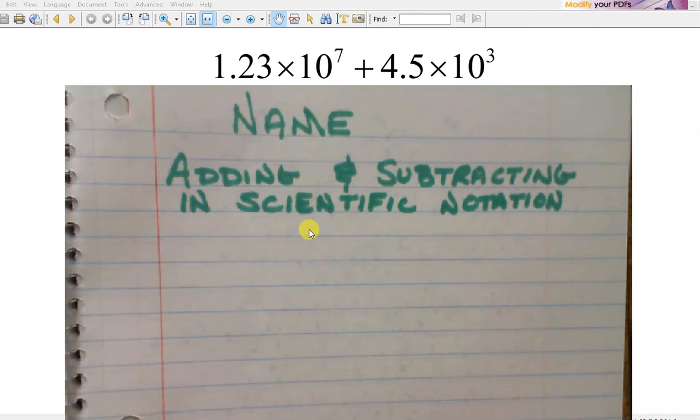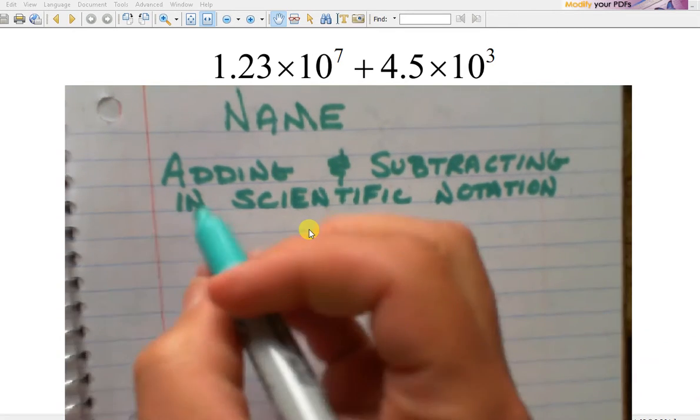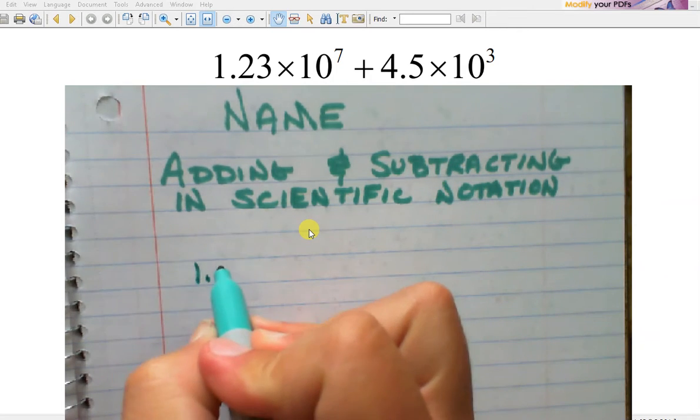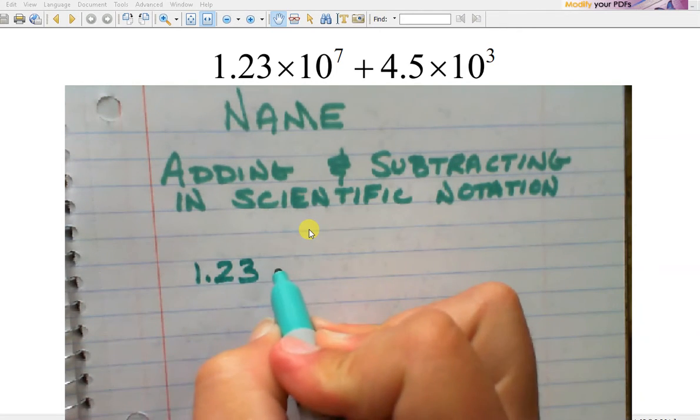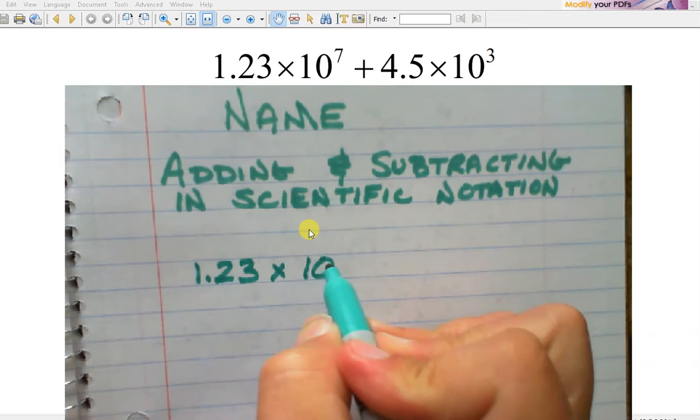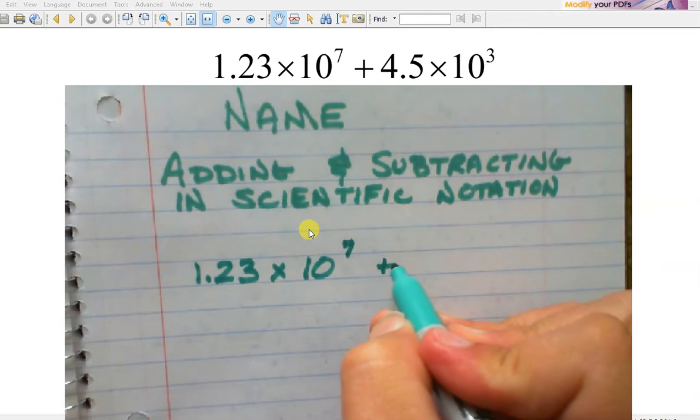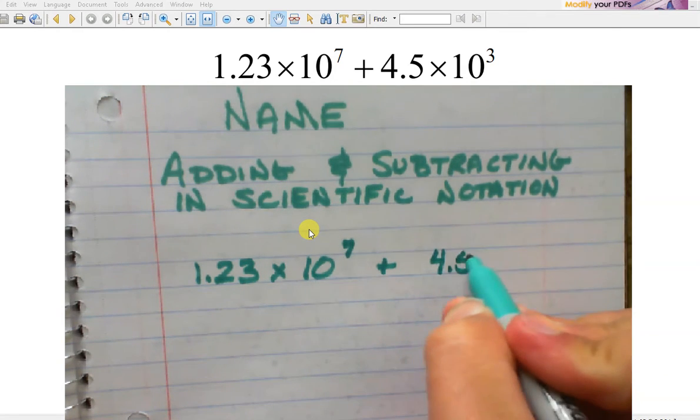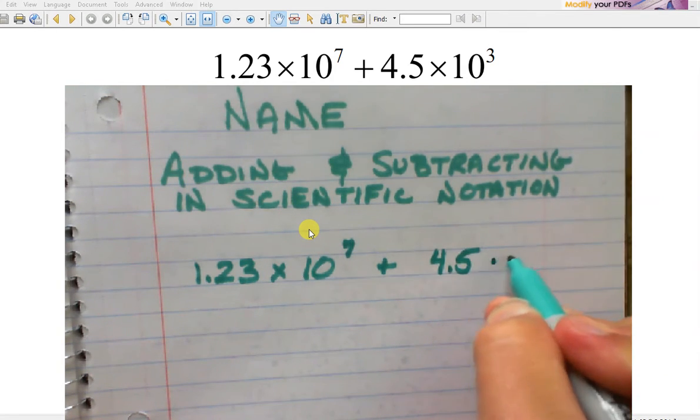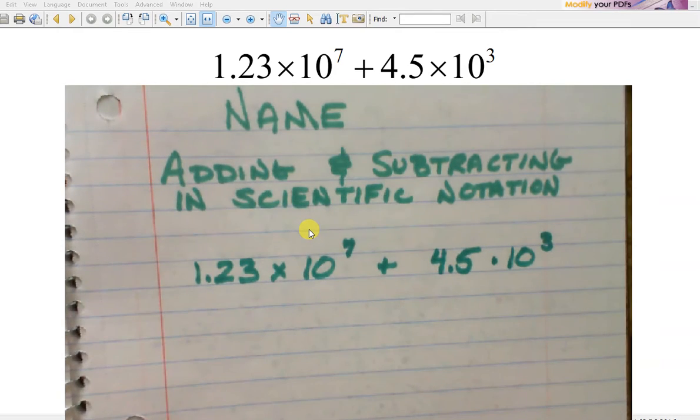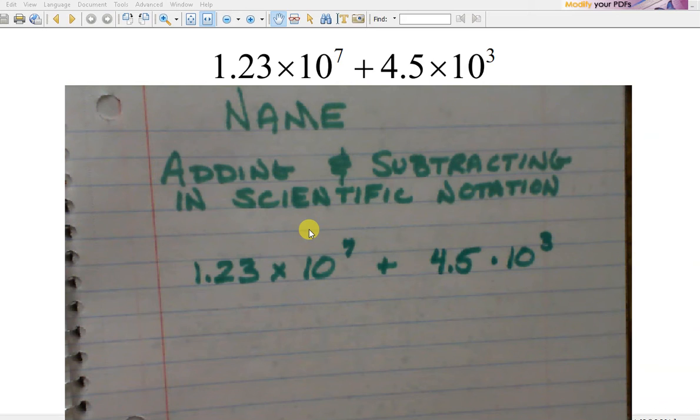So I'm going to take both of these numbers. So I have 1.23 times 10 to the seventh plus 4.5 times 10 to the third. And I'm going to start by putting them both into standard form.